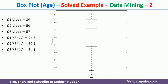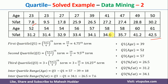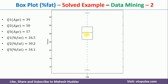Similarly we can draw the box plot for percentage fat. Q1 is 26.5, Q2 is 30.2, Q3 is 34.1, the minimum value is 7.8, and the maximum value is 42.5. The box plot shows the minimum at 7.8, maximum at 42.5, Q1 at 26, Q2 at 30, and Q3 at 34.1.